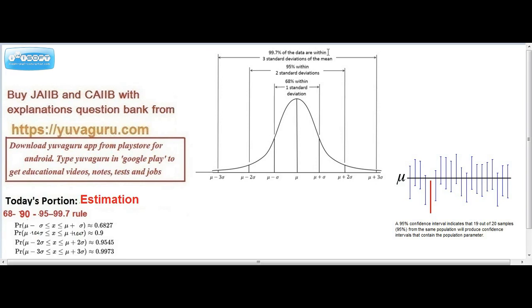This 68-95-99.7 rule states that once you draw a normal curve and put the parameter mu - what do you mean by parameter? Parameter means the element which we use, like mean, standard deviation. These are all parameters. You can check out another video of mine where it's explained. Parameters and various terms are used.